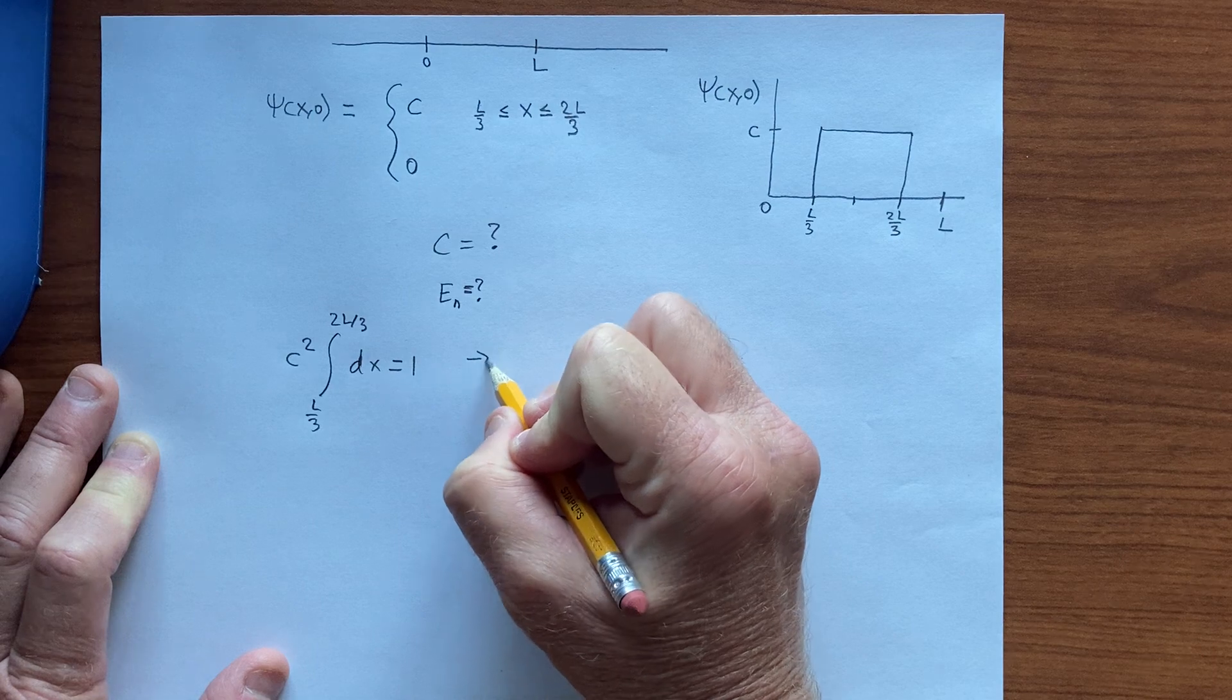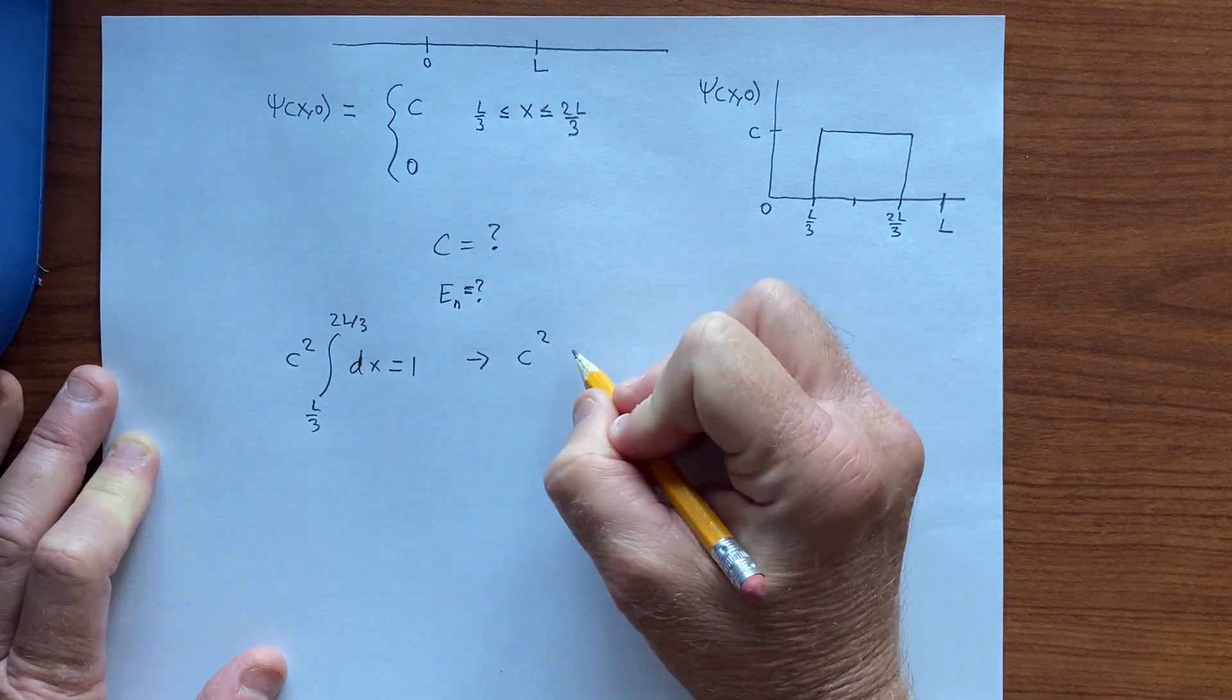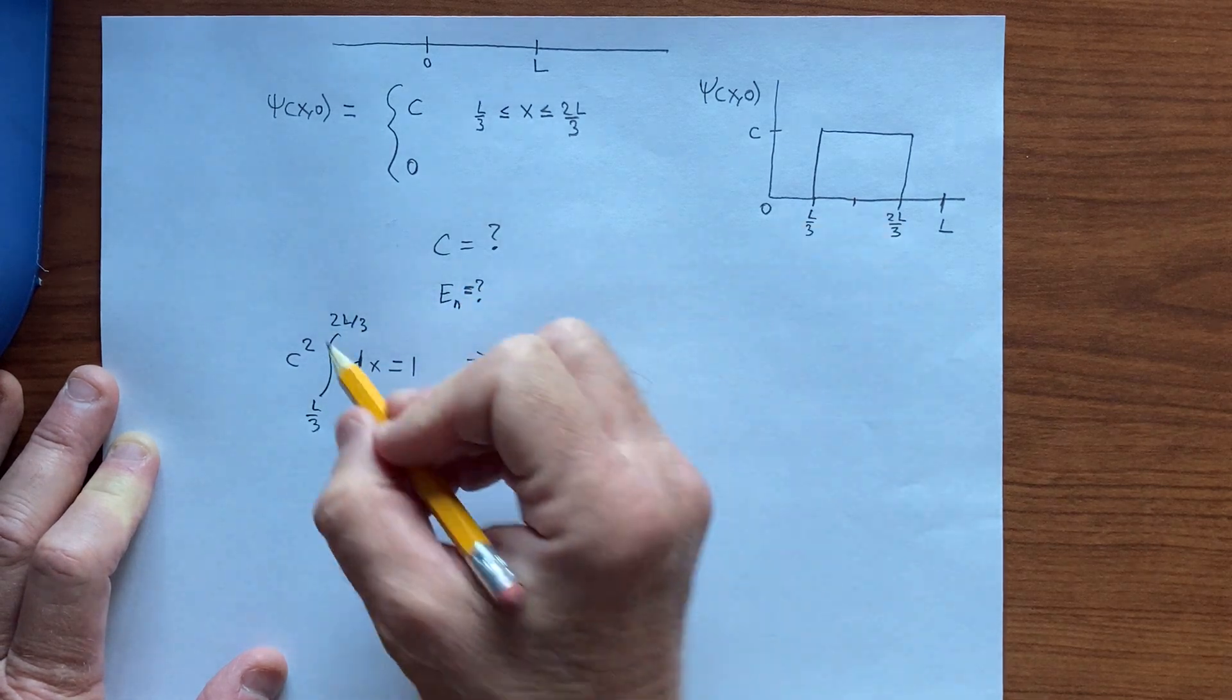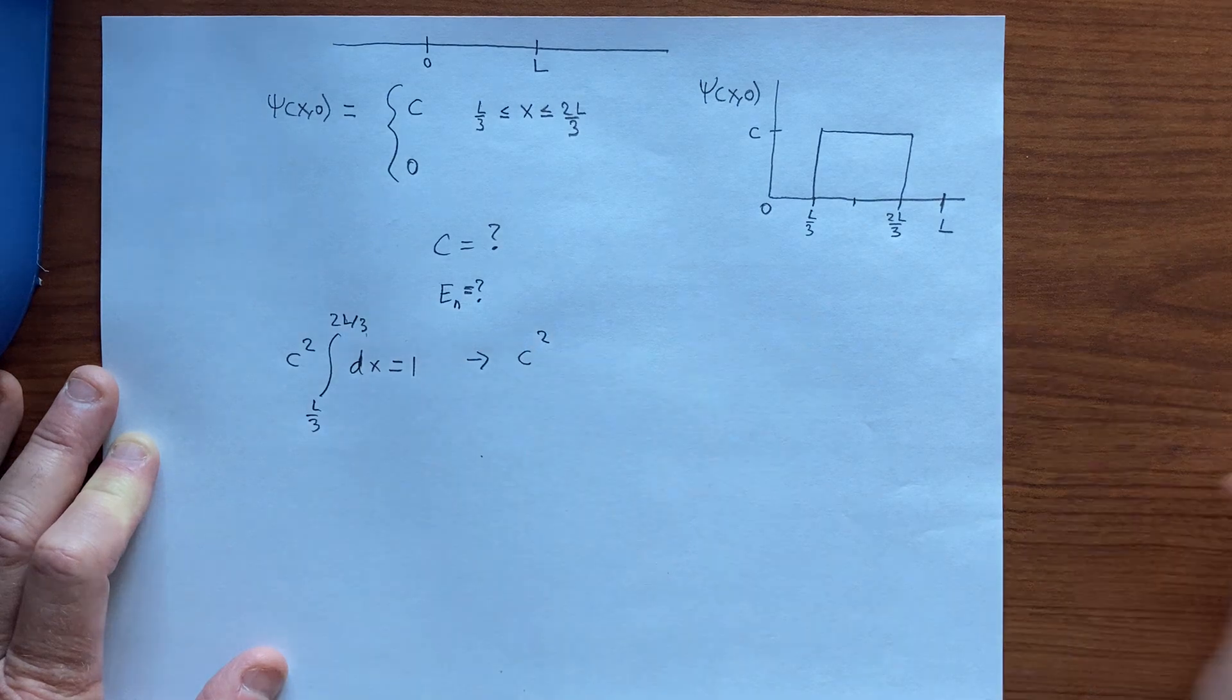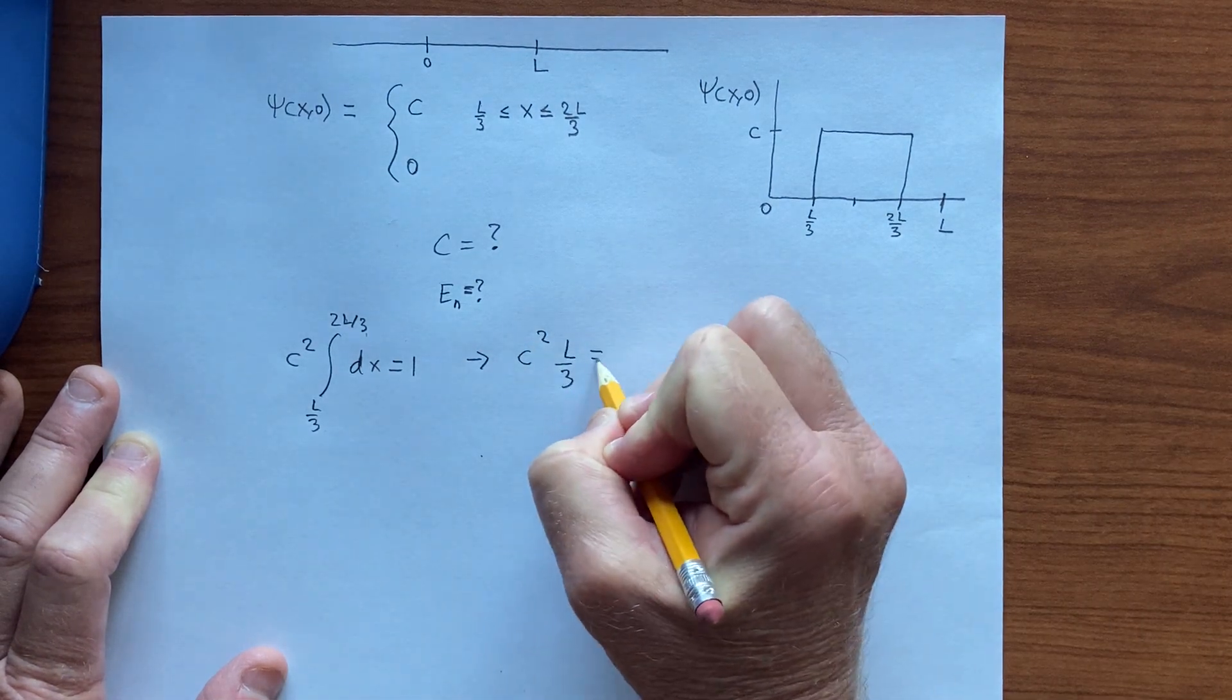And this becomes, I just have c squared, and I get x evaluated from here to there, and so that's 2L over 3 minus L over 3. And so I get L over 3, and that has to be equal to 1.